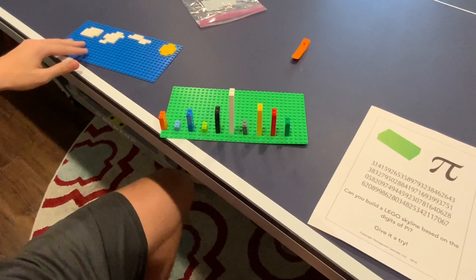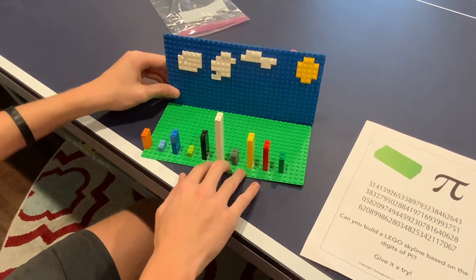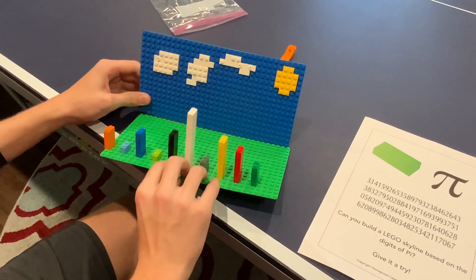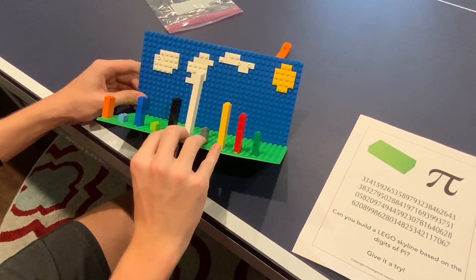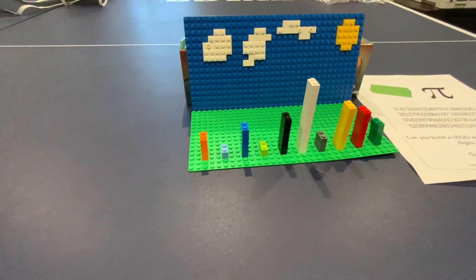And then what you can do is, I don't have a book with me, but we'll show you a little clip of it. Have it put together and it makes a nice little city thing with some clouds and the sun in the background. So here's the finished skyline.